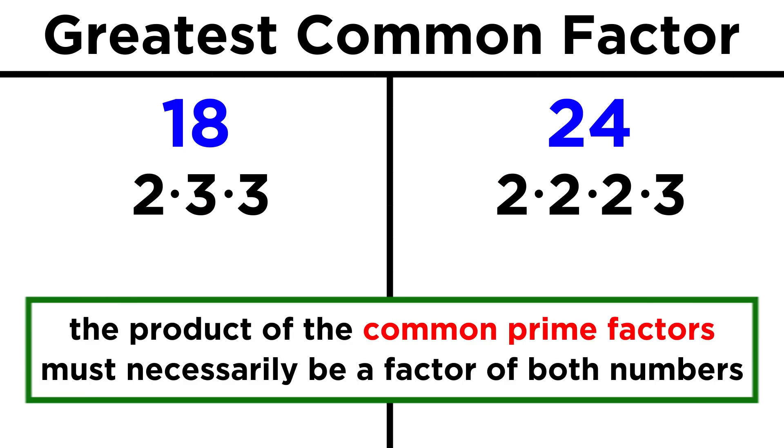This works because if we take all of the prime factors present in both lists, they must necessarily give a product that is a factor of both numbers, and with no more prime factors left in common to multiply, this will necessarily be the greatest common factor.